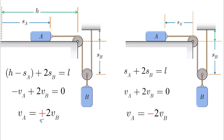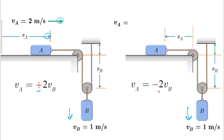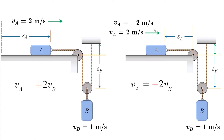This means vA equals plus 2vB. Assuming vB equals +1 m/s (downward) in both cases: on the left side vA equals +2, meaning to the right; in the other case vA equals −2, and since positive was assumed to the left, −2 also means to the right. In both cases we get the same physical answer.